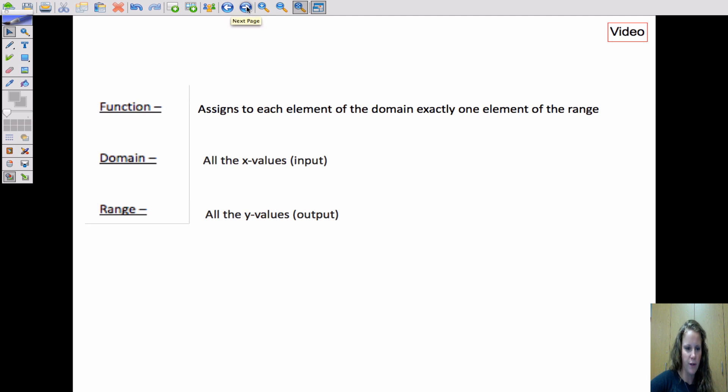So we're going to first define function. A function assigns each element in a domain, so x's, to exactly one element in the range. And that's exactly what domain and range are. Domain is all the x values, or the inputs, and range is all the y values, or the outputs.